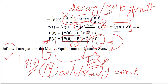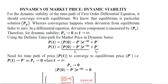After developing the definite time path for market equilibrium in the dynamic sense, we now talk about dynamic stability. The dynamic stability is to be judged here, and for that we will use the same equation for the time path. What we want is that the complementary function, which shows the deviation, reduces to zero or approaches zero as time goes on.